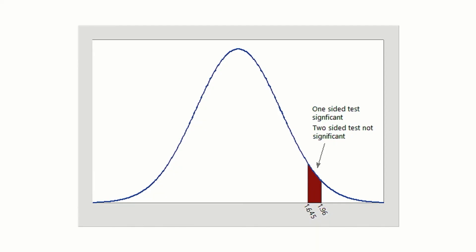Notice, the cutoff for rejecting here is not as extreme as the two-sided test. So if the direction of the result in the data matches the direction of the one-sided alternative, it is easier to achieve statistical significance with a one-sided test.